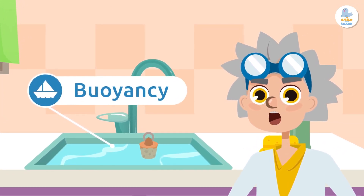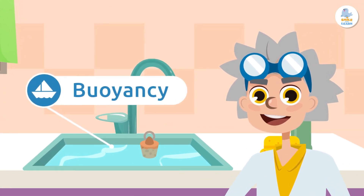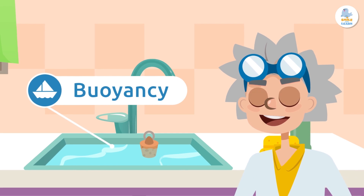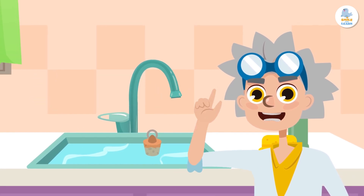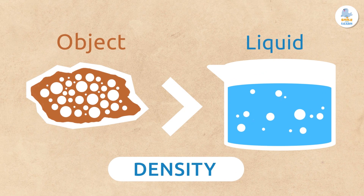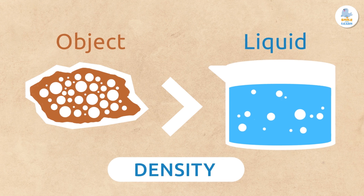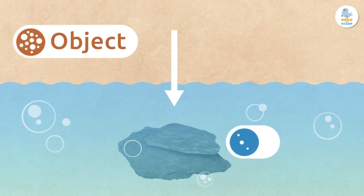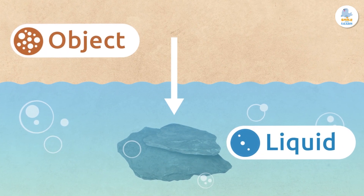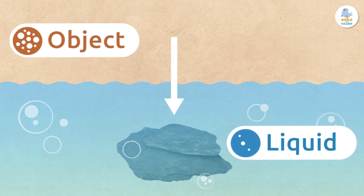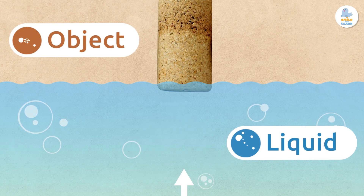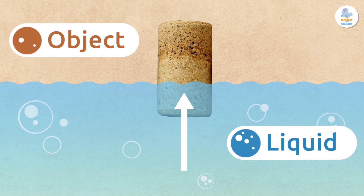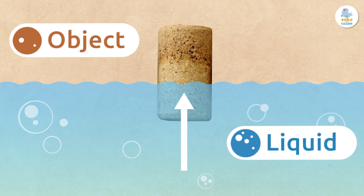Buoyancy. The buoyancy of a material in a liquid depends on the density of the liquid and the density of the object. If the object has a higher density than the liquid, it will sink — for example, a stone in water, since the density of the stone is greater than that of the water. But this cork stopper will float since it has a lower density.